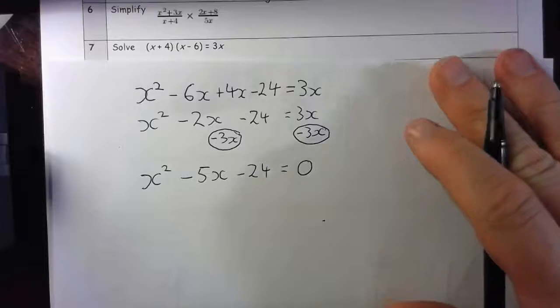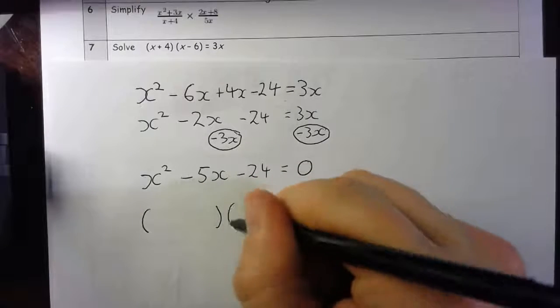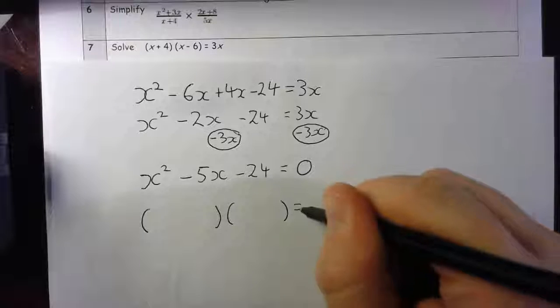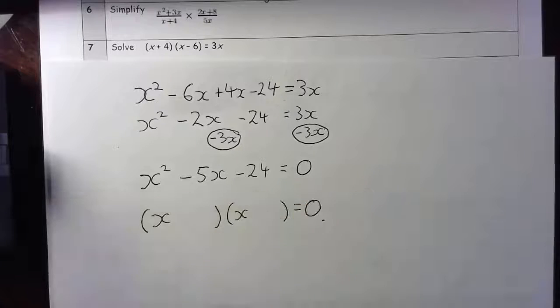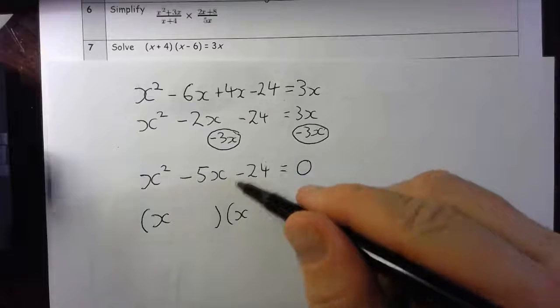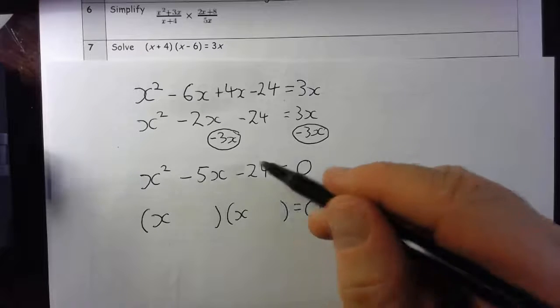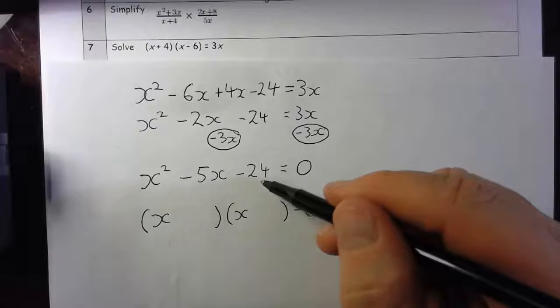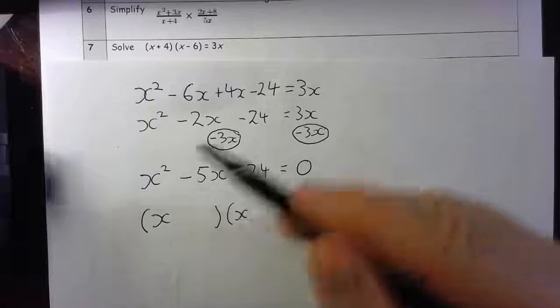Now I'm going to have a go and see if this is factorizable. So what I need, if it is going to be factorizable, is an x here and an x here to generate x squared.